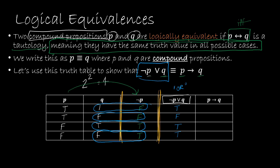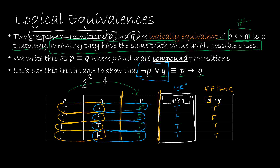Now let's try the other compound proposition: if P then Q. If P is true, then Q must be true to return a true value; if P is false, then it's automatically true. True-true: P is true and Q is true, so that's true. True-false: P is true but Q is not true, so that's false. False-true and false-false: P is false, so both return true. We then compare the two columns — they match up exactly, so we've demonstrated the two compound propositions are logically equivalent.